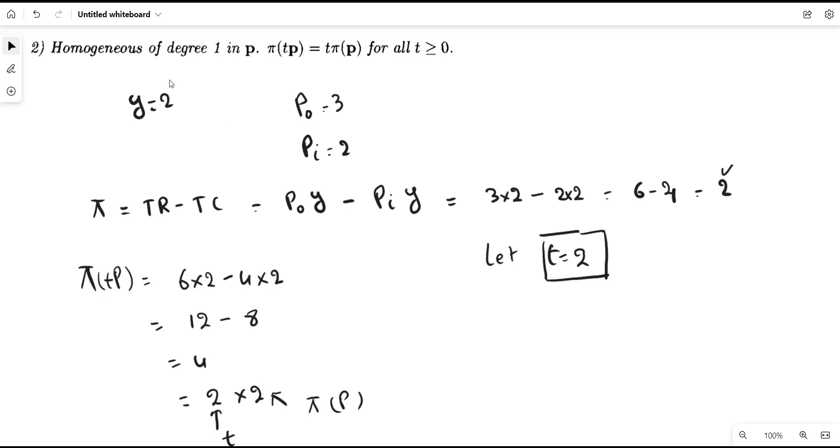So it means that profit function is homogeneous of degree 1. The rate at which you scale up all the prices, the profit will also be increased by the same scalar.